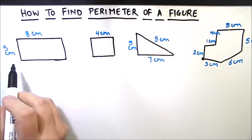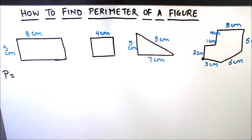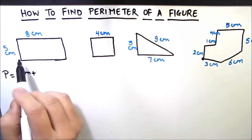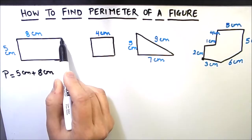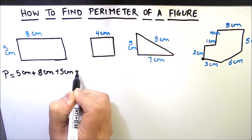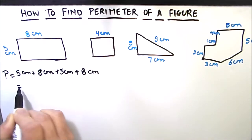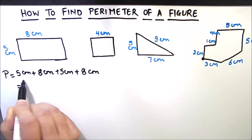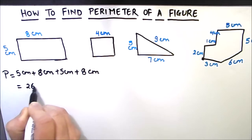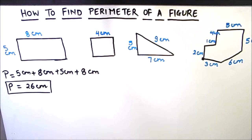Finding perimeter is very easy if we know the sides of the particular field. For finding the perimeter of a rectangular field, we need to take the sum of all the sides. Here we have a rectangular field whose breadth is 5 centimeters and length is 8 centimeters. Since opposite sides are equal in a rectangle, we add all four sides: 8 plus 5 is 13, and 13 plus 13 is 26 centimeters.